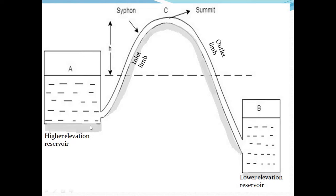This is the first, higher elevation reservoir. The C point of the portion is the inlet limb. The top portion is the summit. The portion between the summit and the lower elevation reservoir is the outlet limb. The S point of the portion is the flow of the siphon.